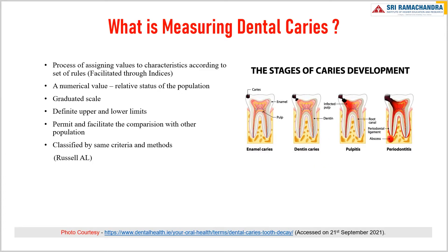What is measuring dental caries? It is a process of assigning values to characteristics according to a set of rules, which are facilitated through indices. The numerical value represents the relative status of the population through a graduated scale with definite upper and lower limits, which permits and facilitates comparison with other populations classified with the same criteria and methods, by Russell Ayer. The stages of caries development are: enamel caries, dentinal caries, pulpitis, and periodontitis.